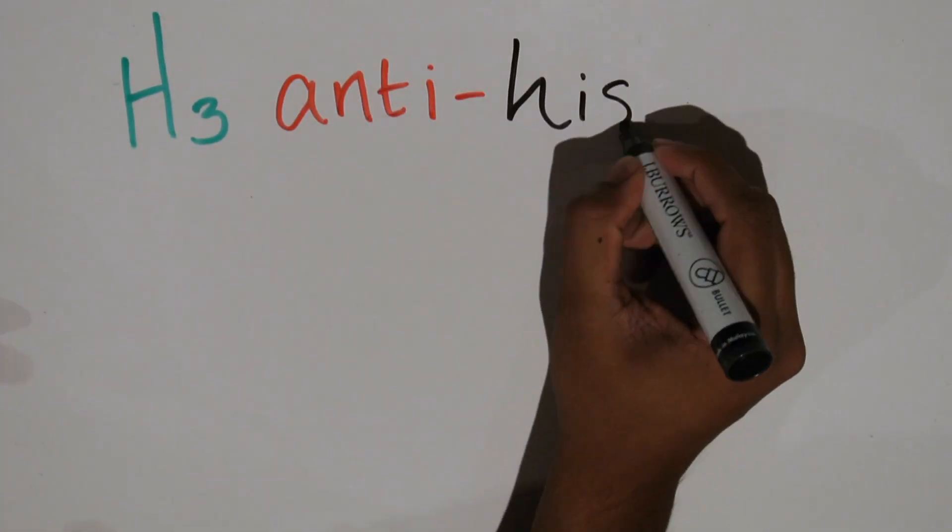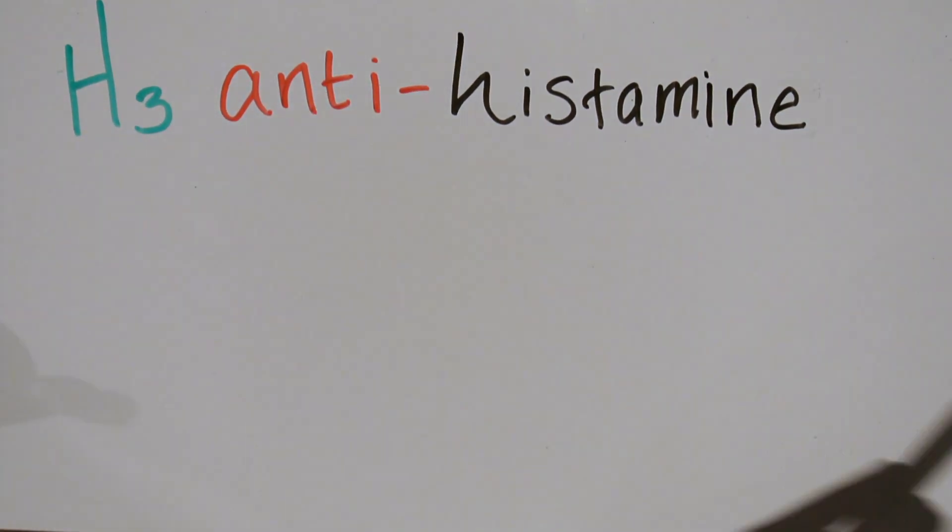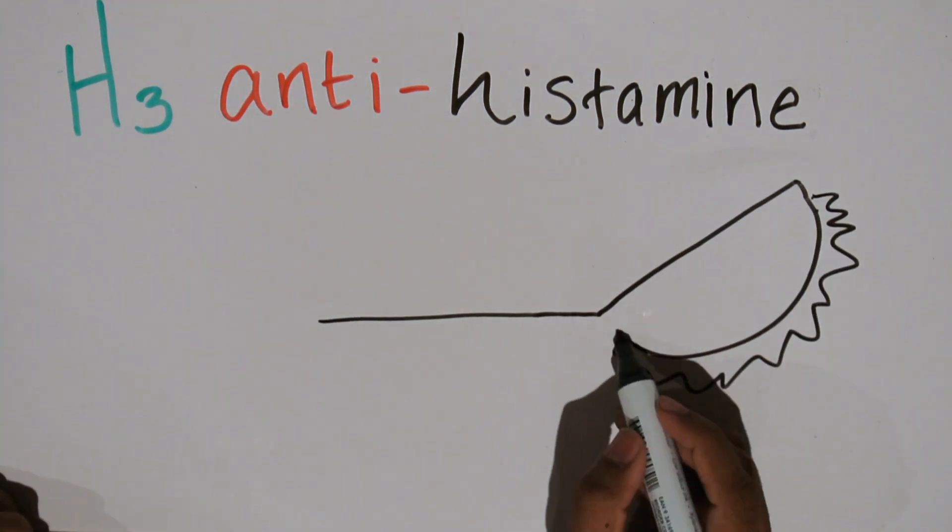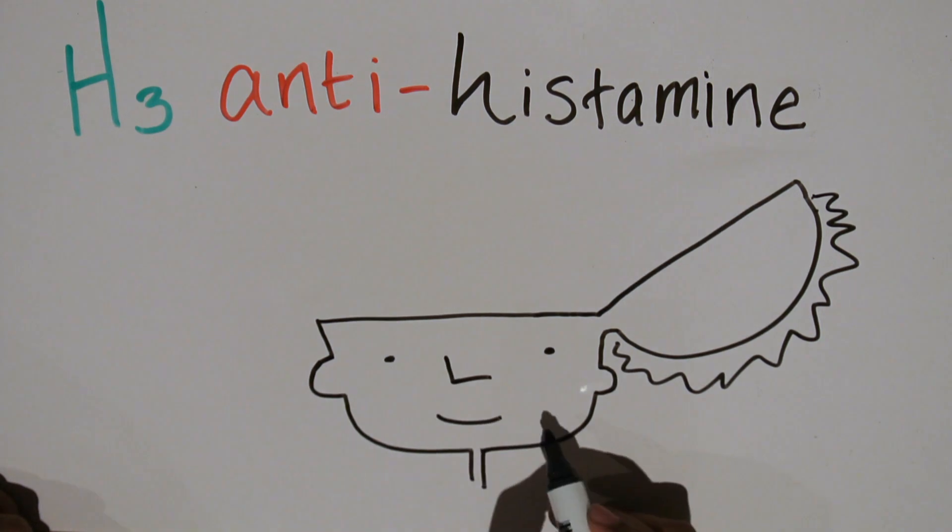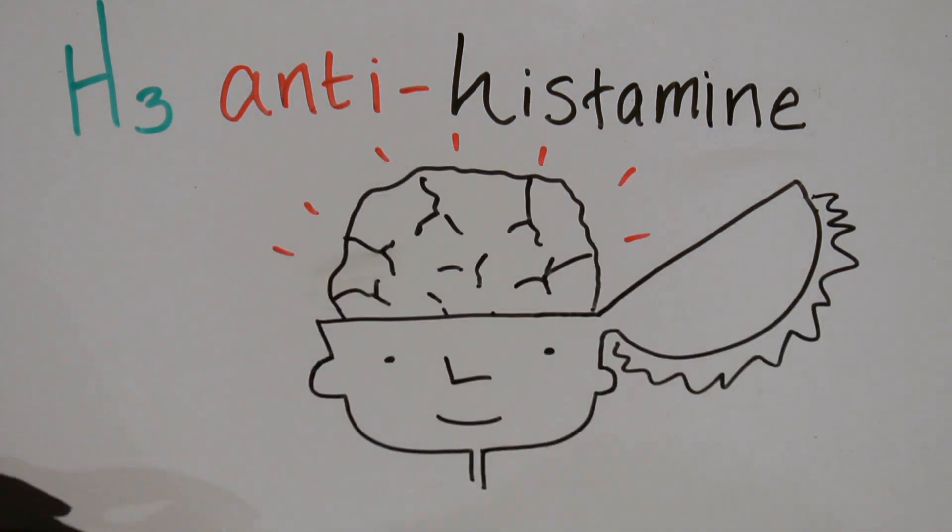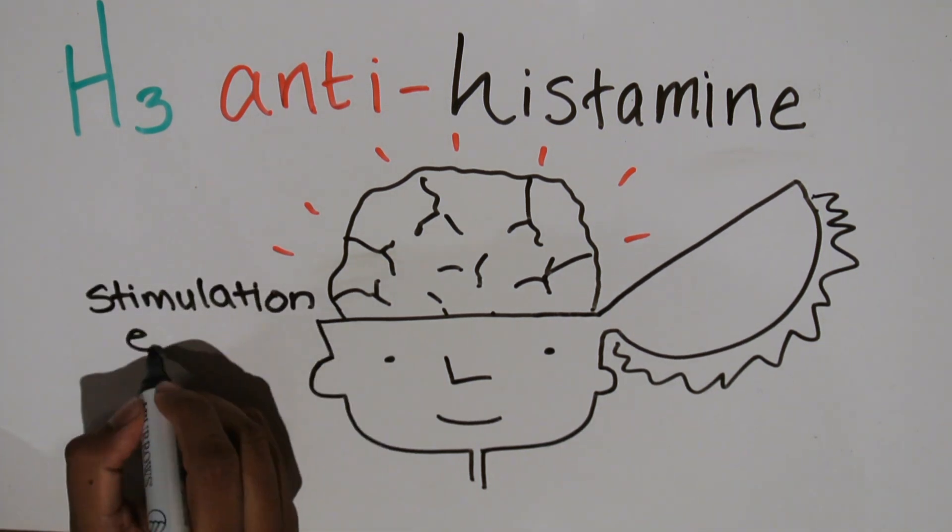H3 receptors are an interesting class type. These are primarily found in the brain and instead of reducing a physiological effect, they act as a histamine release modulator. Hence, the H3 antihistamines actually inhibit histamine release in the brain to cause stimulatory effects.